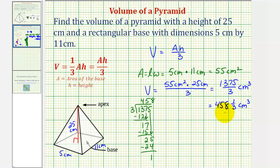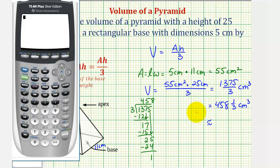And if we're asked to round to two decimal places, let's convert this to a decimal. We can get our decimal approximation using this fraction or by converting one-third to a decimal. Let's show it both ways. 1,375 divided by 3, rounded to two decimal places, would be 458.33 cubic centimeters.